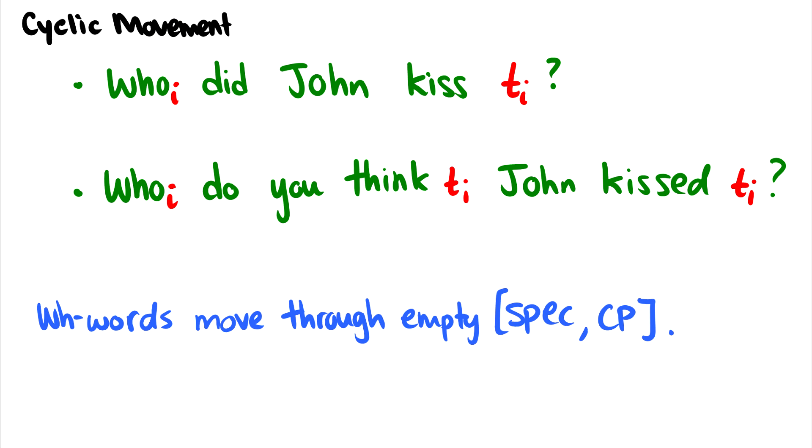But it gets a little more complicated because we don't have to say something like, who did John kiss? We can embed sentences. Who do you think John kissed? Who does Mary think that you believe that John kissed? And in this case, we have something called cyclic movement where someone was kissed by John. So John kissed someone. And that someone moves up to be, who do you think John kissed? So I can think John kissed Mary, but maybe John didn't kiss Mary, John kissed Sue. So these could be different.